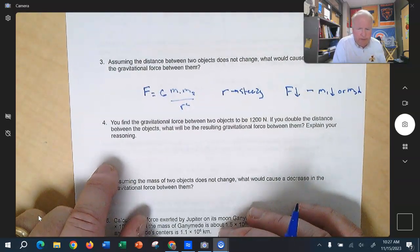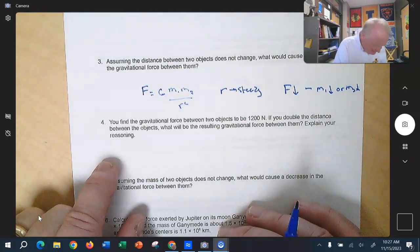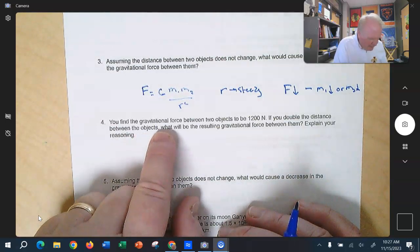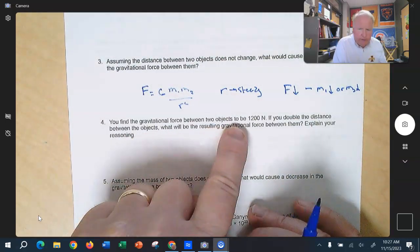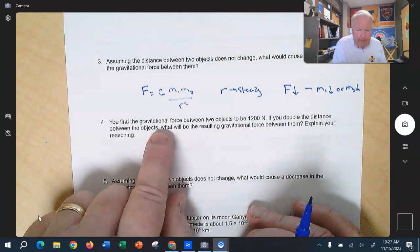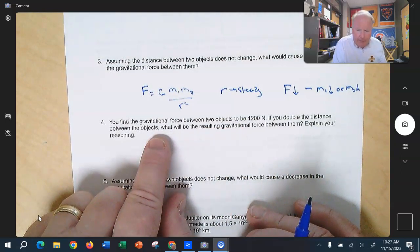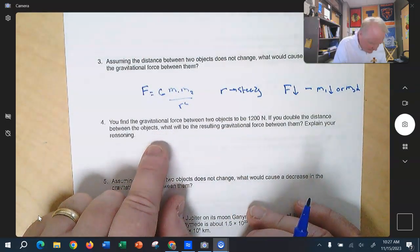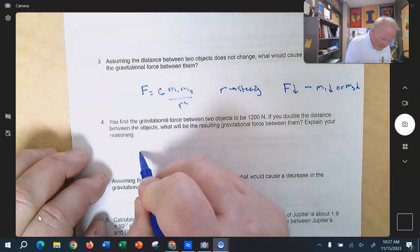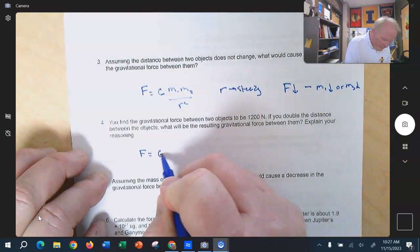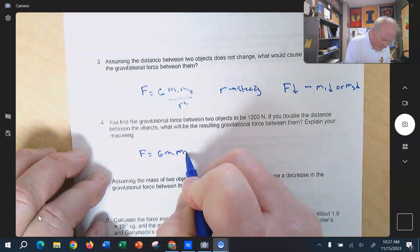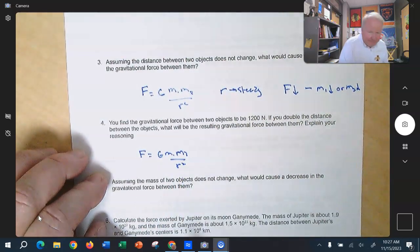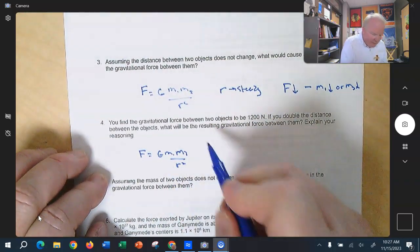Now, number four is a little bit different. They're going to say, find the gravitational force between two objects is 1,200. What would happen if we double the distance between them? So again, all you do is write down the equation, f is equal to G m1 m2 divided by r squared. So that's the original equation.